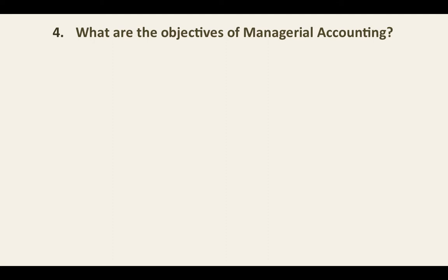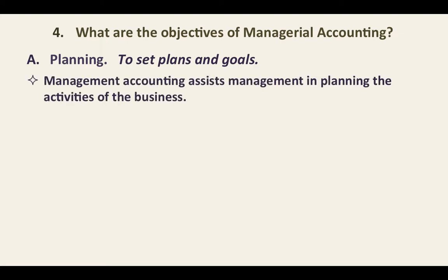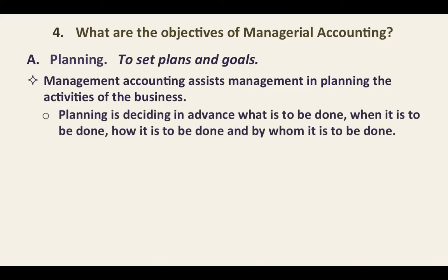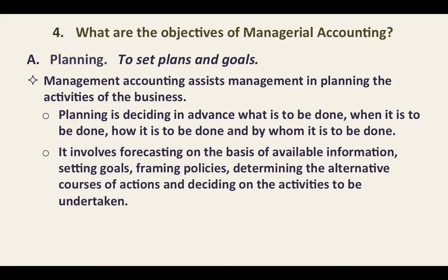What are the objectives of managerial accounting? The first objective is planning — to set plans and goals. Management accounting assists management in planning the activities of the business. Planning is deciding in advance what is to be done, when it is to be done, how it is to be done, and by whom it is to be done. Planning involves forecasting on the basis of available information, setting goals, framing policies, determining alternative courses of action, and deciding on the activities to be undertaken.